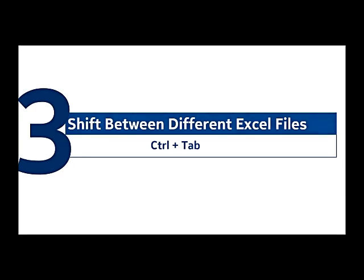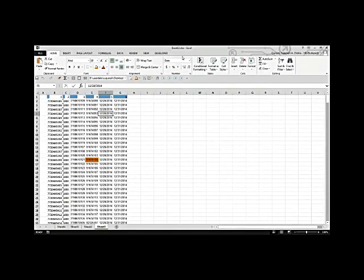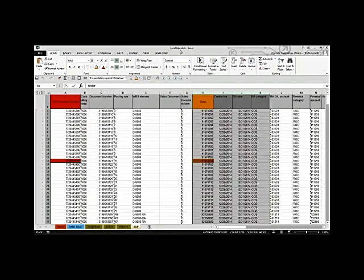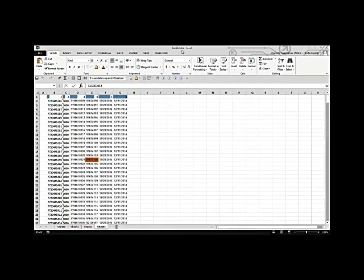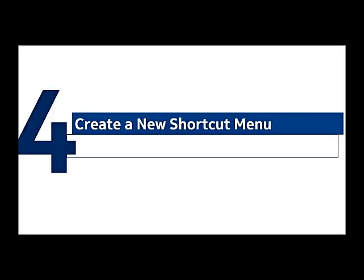How to shift between two Excel files: use Control+Tab. You know Alt+Tab, but Alt+Tab cycles through all open files regardless of application. Control+Tab moves only between Excel files. Let me show you — pressing Control+Tab cycles through only the Excel files, not other open windows. Just remember Control+Tab.